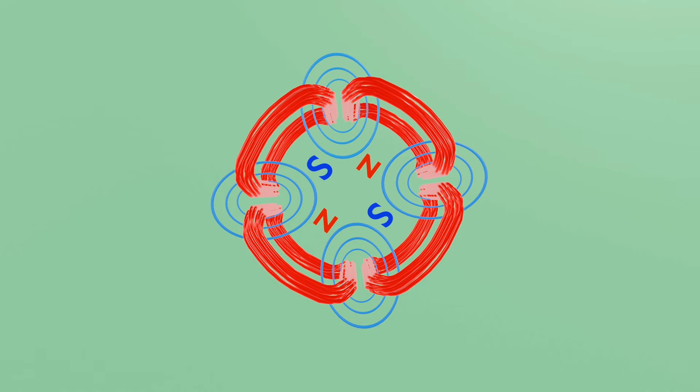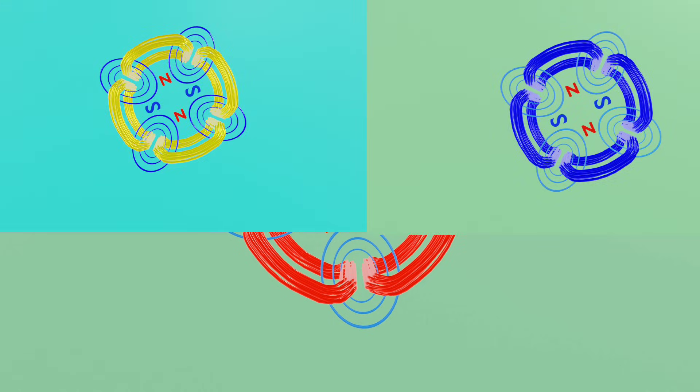This same connection is done for the other two phases. As you see, by this we produce a four-pole magnetic field in all three windings.